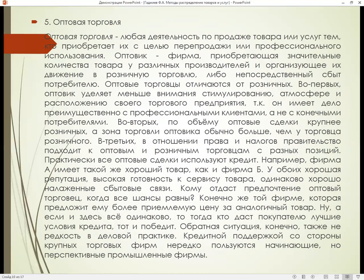Оптовые торговцы отличаются от розничных. Во-первых, оптовик уделяет меньше внимания стимулированию, атмосфере и расположению своего предприятия, так как он имеет дело преимущественно с профессиональными клиентами, а не с конечными потребителями. Во-вторых, по объёму оптовые сделки крупнее розничных, а зона торговли оптовика обычно больше, чем у розничного торговца. В-третьих, в отношении права и налогов правительство подходит к оптовым и розничным торговцам с разных позиций. Практически все оптовые сделки используют кредит.